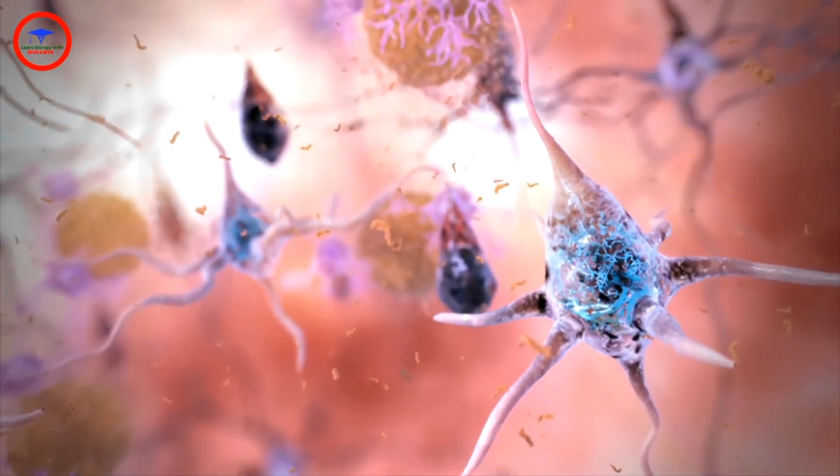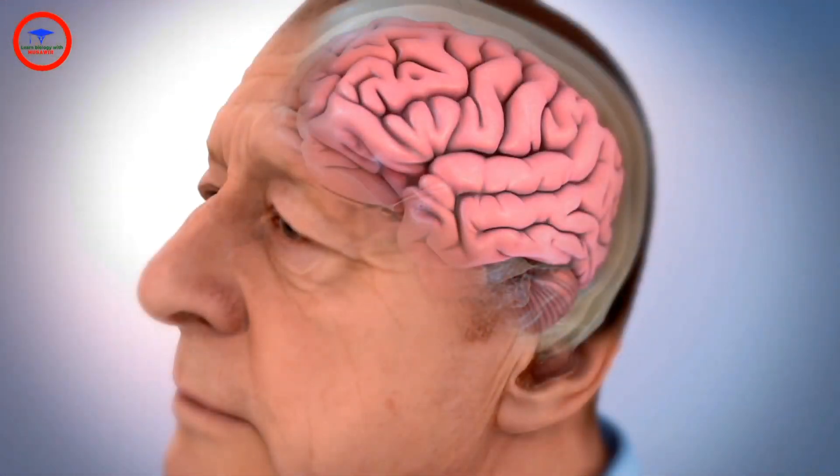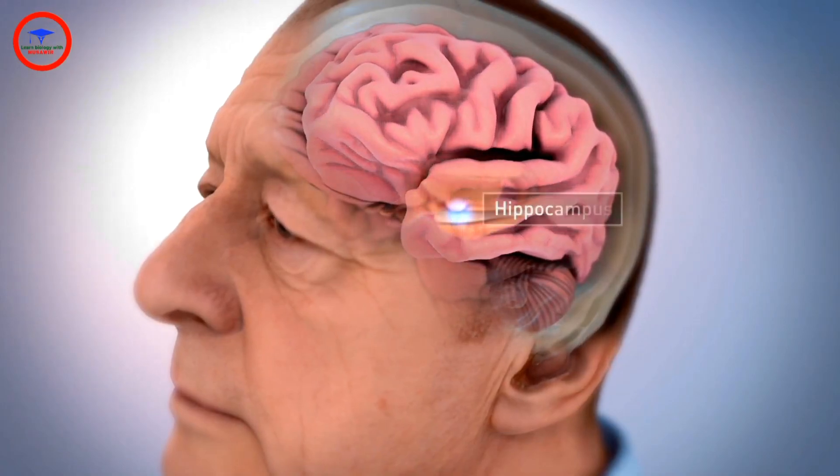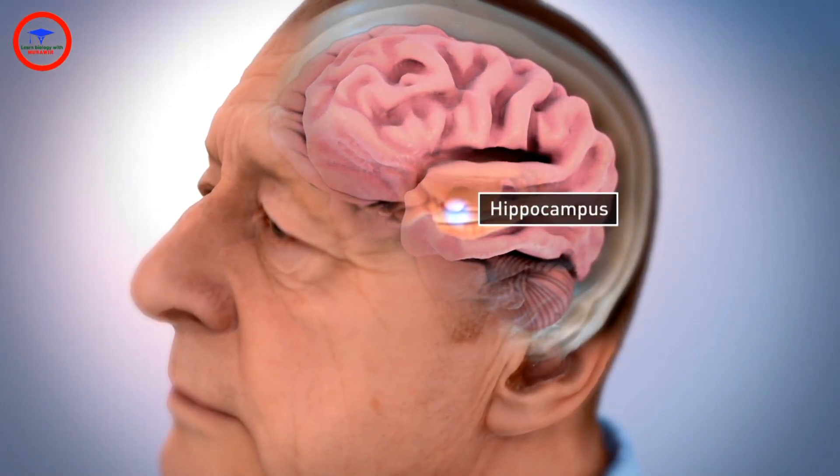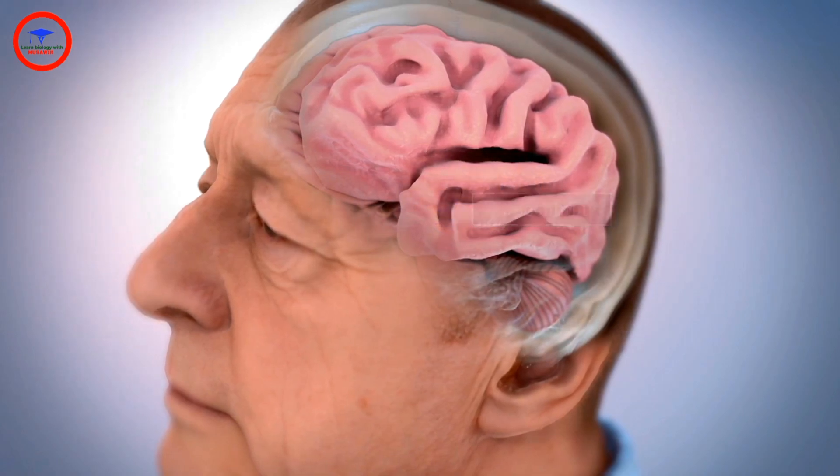Eventually, neurons lose their ability to communicate. As neurons die, the brain shrinks, beginning in the hippocampus, a part of the brain important to learning and memory.